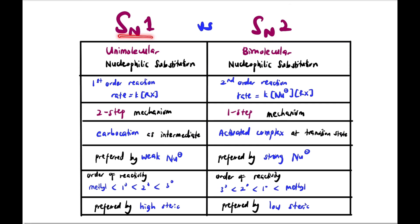Quick comparison between SN1 and SN2. Unimolecular versus bimolecular nucleophilic substitution. First order reaction, rate equals K concentration of RX haloalkane. Second order for SN2, rate equals K times concentration of nucleophile and concentration of RX. SN1 is two-step mechanism. SN2 is one-step mechanism. SN1 has carbocation as intermediate. SN2 has activated complex at transition state. SN1 preferred by weak nucleophile. SN2 preferred by strong nucleophile. And in terms of reactivity, for SN1, easiest is tertiary because it prefers high steric hindrance. SN2 is preferred by methyl, so low steric hindrance.